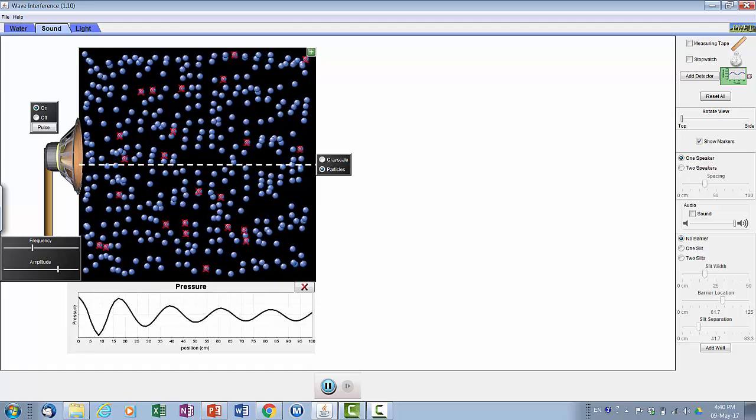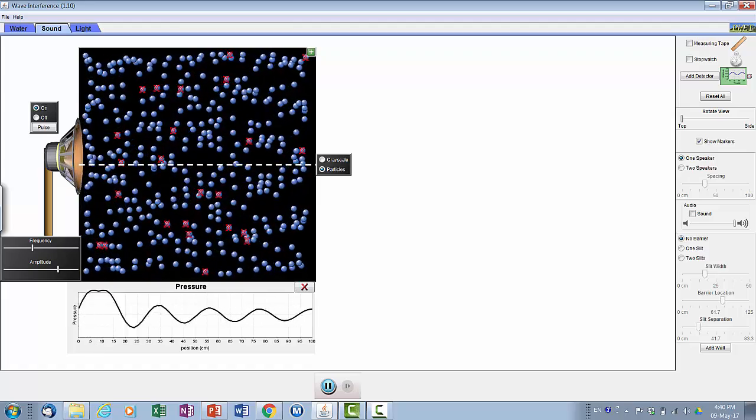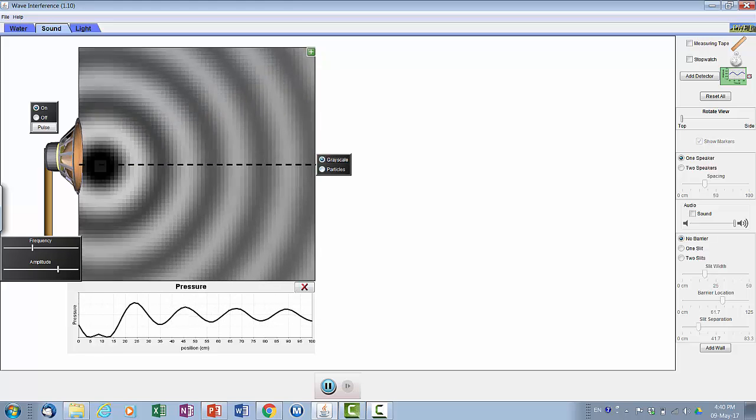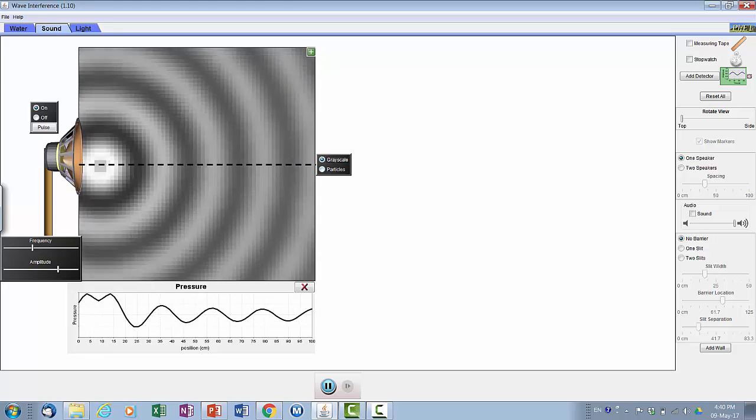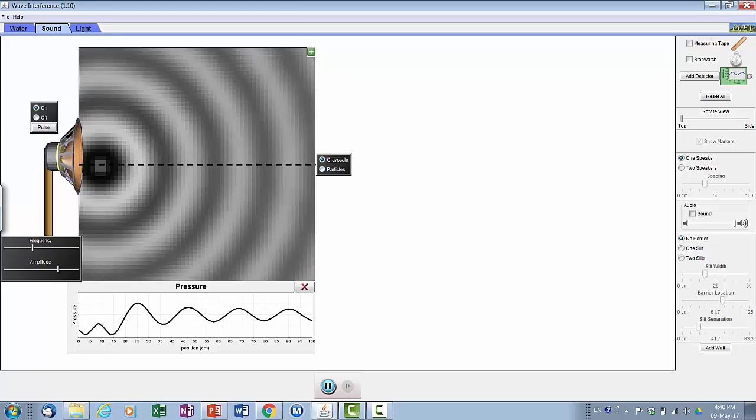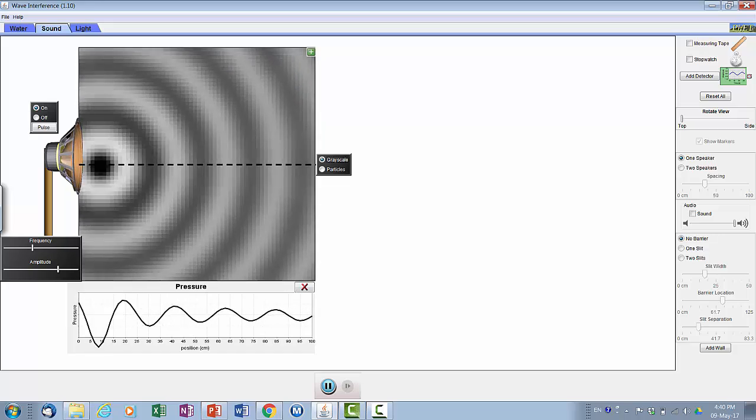If you look at the grayscale, it will look something like this. Notice that the sound wave in terms of pattern is very similar to the ripple that you saw just now.